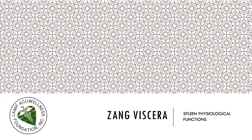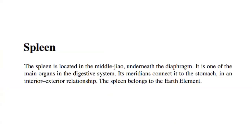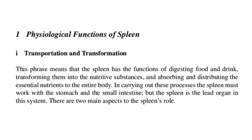Zang viscera — the spleen. Physiological functions: the spleen is located in the middle jiao, underneath the diaphragm. It is one of the main organs in the digestive system. Its meridians connect it to the stomach in an interior-exterior relationship. The spleen belongs to the earth element. Transportation and transformation — this phrase means that the spleen has the functions of digesting food and drink, transforming them into nutritive substances, and absorbing and distributing the essential nutrients to the entire body. In carrying out these processes, the spleen must work with the stomach and the small intestine, but the spleen is the lead organ in this system.